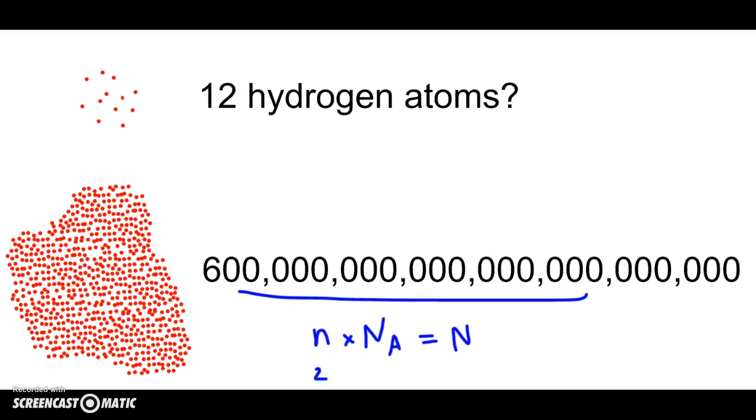So two moles, you multiply by Avogadro's number, six times ten to the twenty-three. And how many particles would you have?